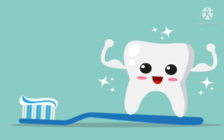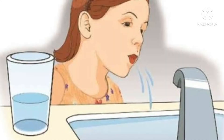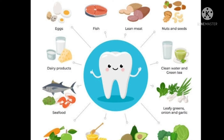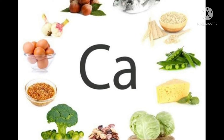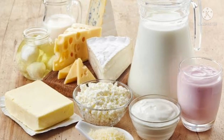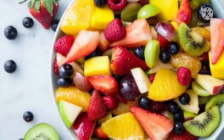Brush your teeth at least twice a day — once in the morning and once before going to bed. Rinse your mouth well after meals. Eat food that is healthy for teeth and gums, such as milk, eggs, curd, and green vegetables. Avoid eating too many sweets, sugar, and soft drinks. Calcium is very important for strong teeth. Milk and milk products such as curd and cheese are rich sources of calcium. Eating fruits and salads also helps in keeping your teeth healthy.